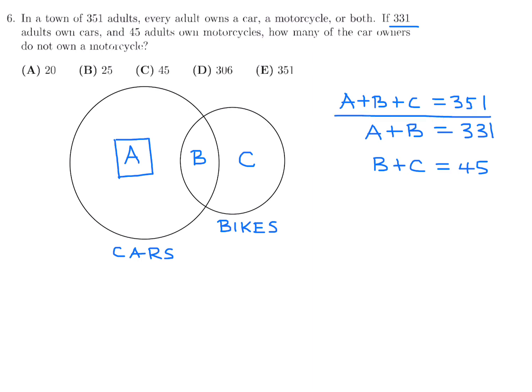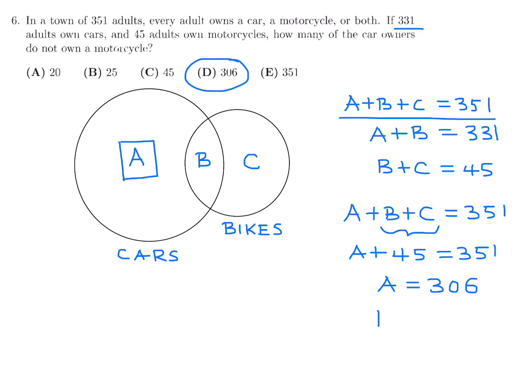Well, that's pretty straightforward. If we take that equation, A plus B plus C is 351, and then we substitute this guy, 45, we have A plus 45 is equal to 351. So that means A is equal to 306. So that's the answer to the question. So number six, the answer is D. And just in case you're curious, if we do the math for the others, B would be 25 and C would be 20.